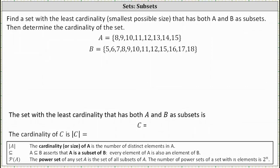Let's begin by reviewing the definition of a subset. A as a subset of B asserts that every element of A is also an element of B. So let's call the set we're looking for set C. We're looking for set C such that A is a subset of C and B is also a subset of C.